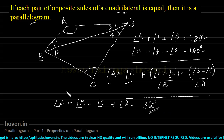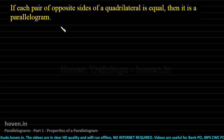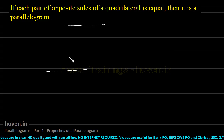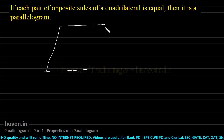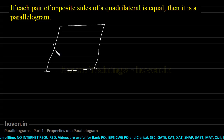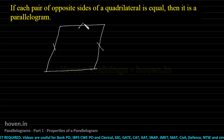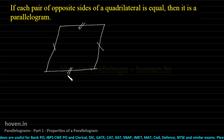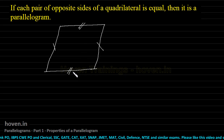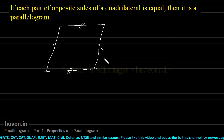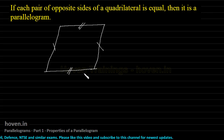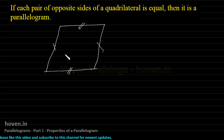Now let me take up what is a parallelogram. A parallelogram is a special quadrilateral in which the opposite sides are parallel to each other. The condition is that this side has to be parallel to this side, and this side has to be parallel to this side — both pairs have to be parallel to each other. If only one pair is parallel and the other is not, then that won't be a parallelogram. All four sides must be involved in the relationship. So if opposite sides are parallel to each other, that quadrilateral is called a parallelogram.